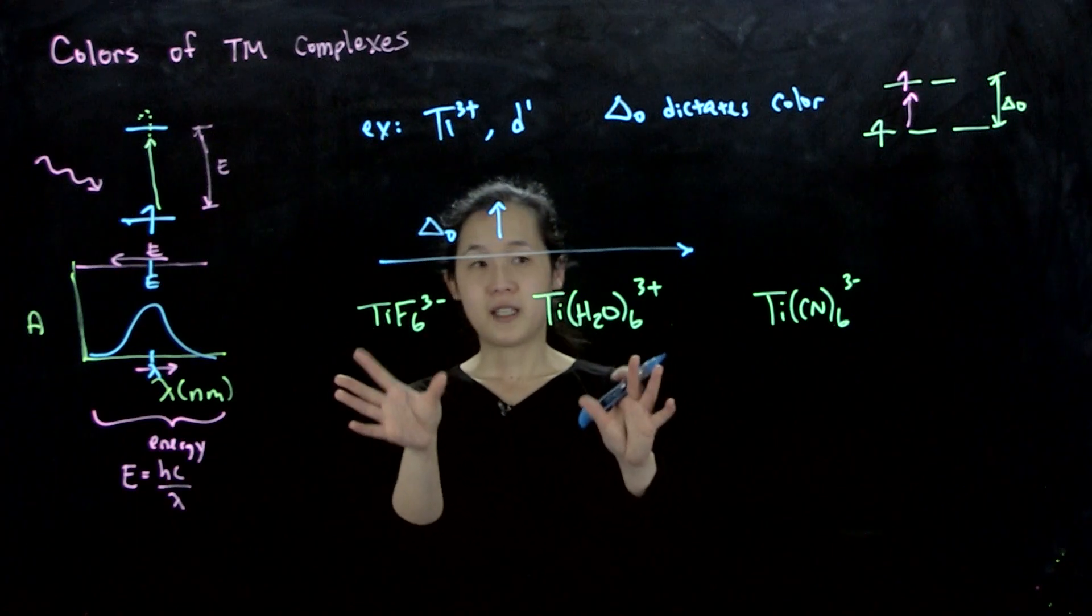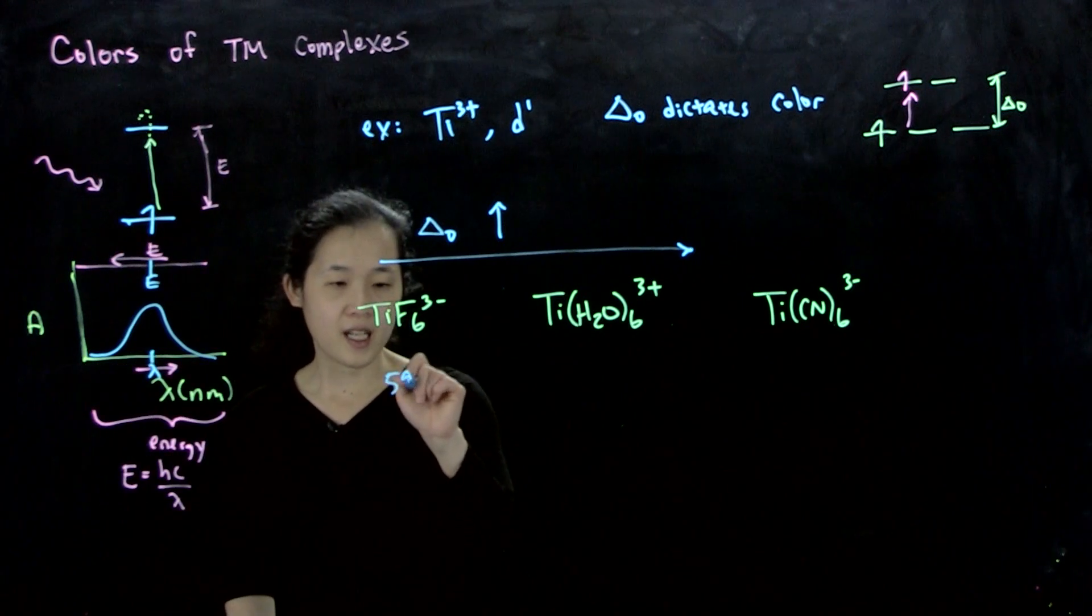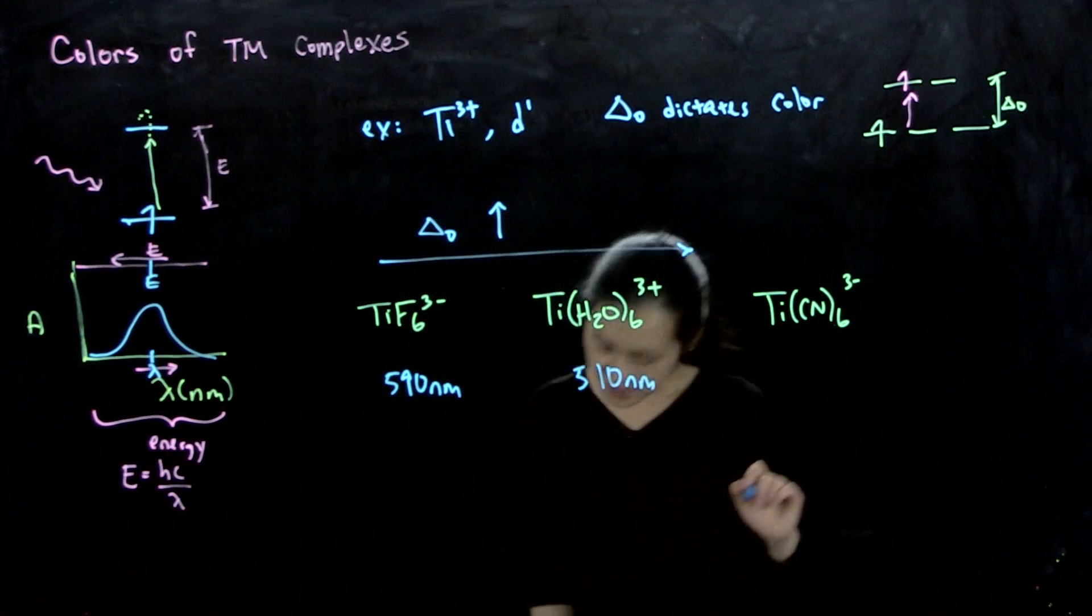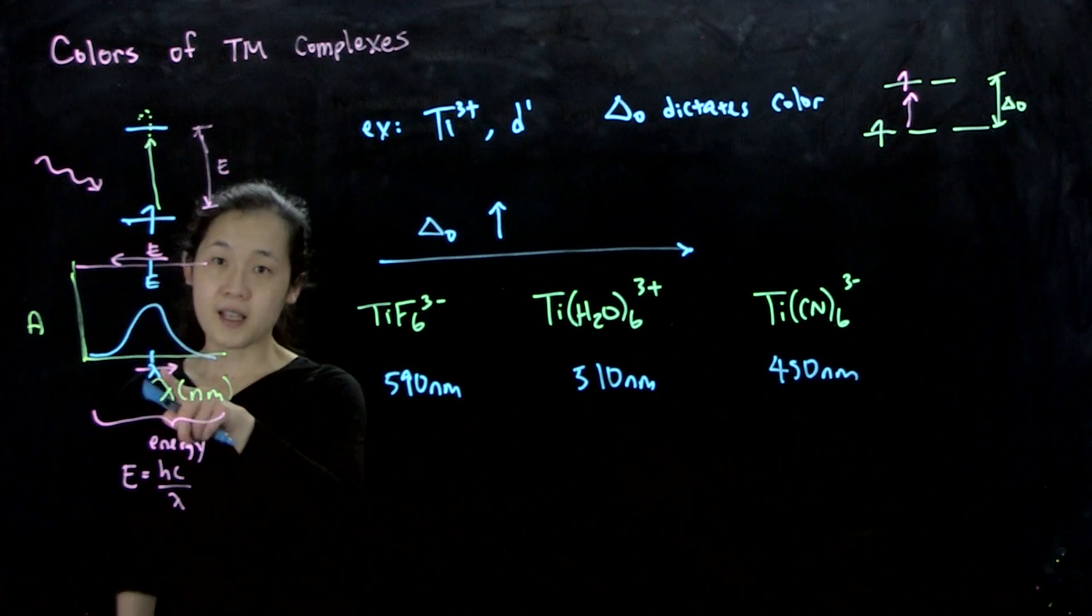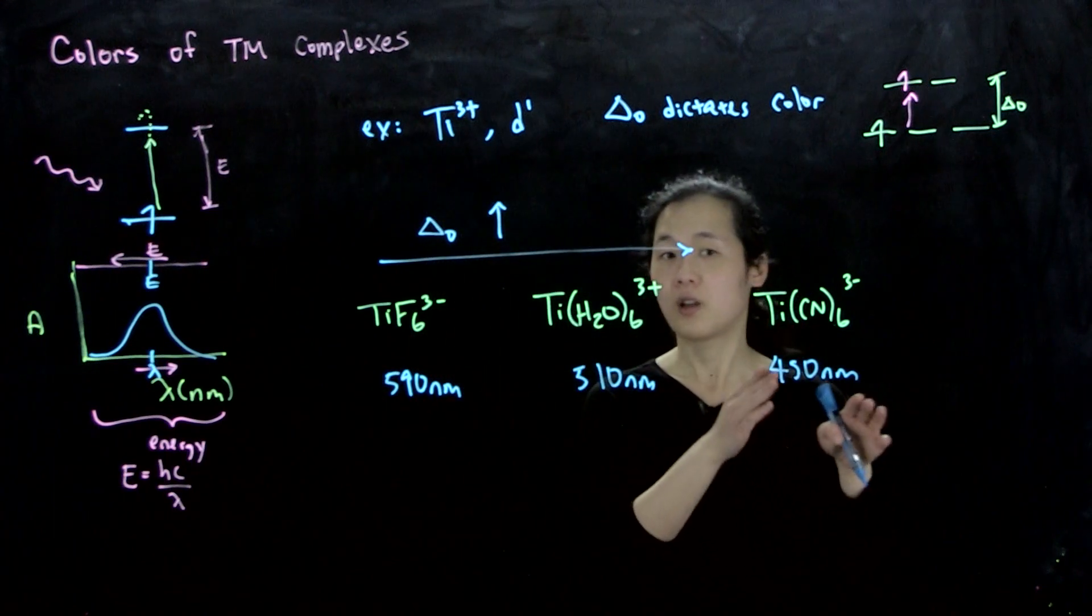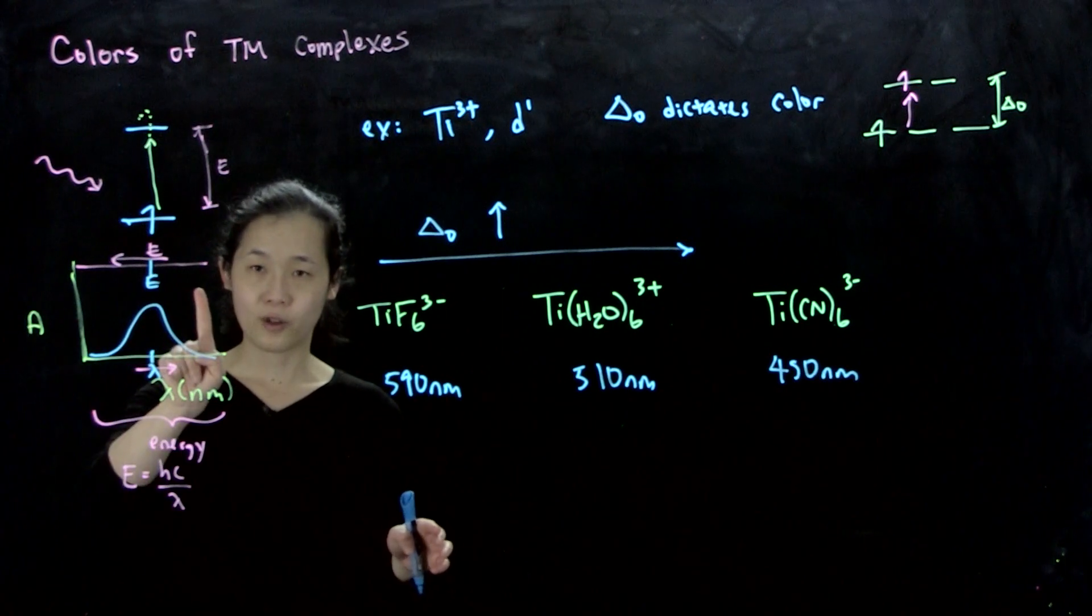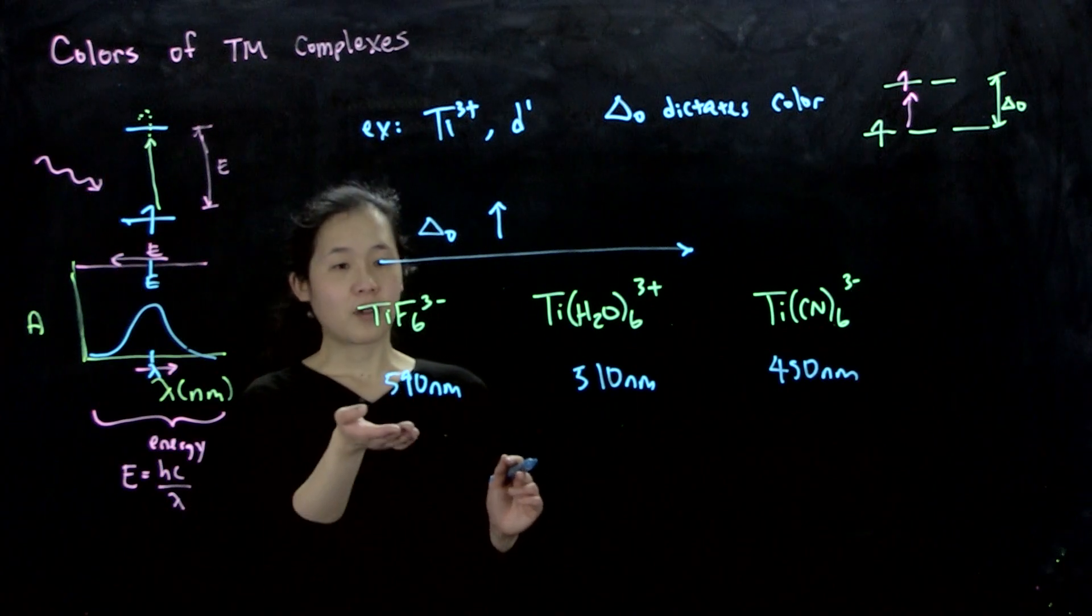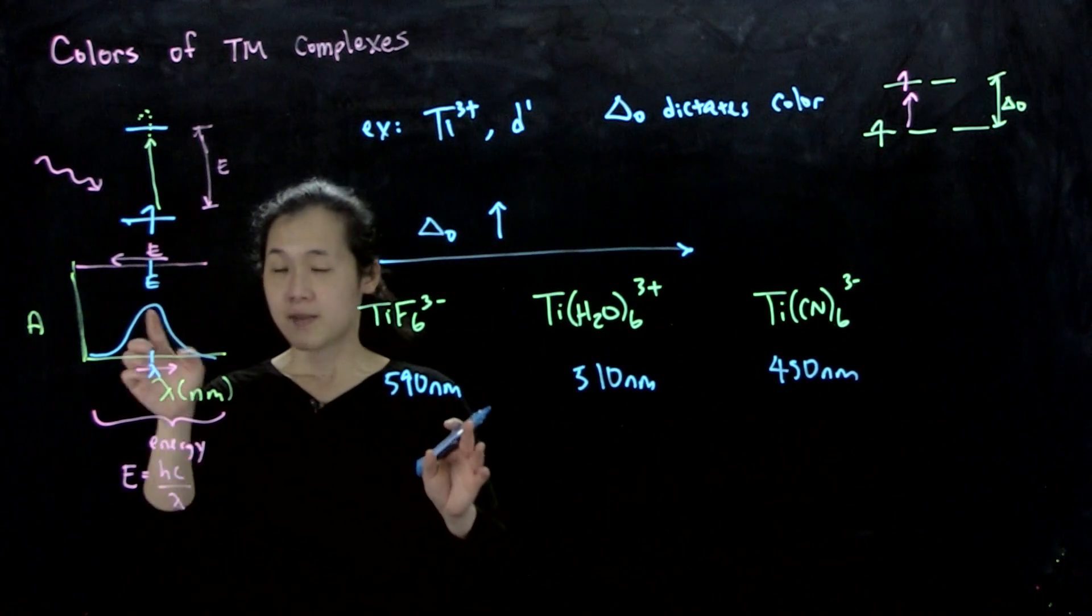As we measure the absorption spectra of these three different complexes, what we see on the x-axis is that this is 590 nanometers, this is 510 nanometers, and then this is 450 nanometers. What we see is that the x-axis position of your absorption peak goes to lower wavelength and higher energy as delta O increases. This goes to smaller wavelength, higher energy, because we're going from here for the fluoride to here for the hexacyano. If you want a conversion, we can convert to wave number, or we can convert to eV by dividing 1240 by the wavelength, for example. This x-axis position, the energy, also tells you what color it is, because this is the energy of photon that light absorbs.